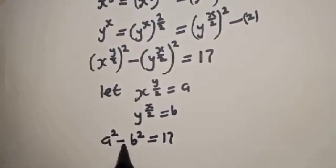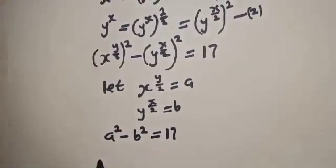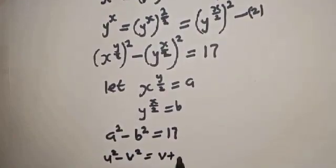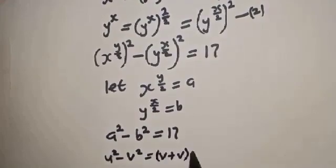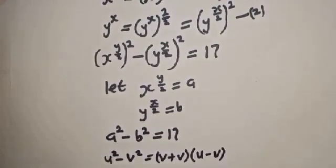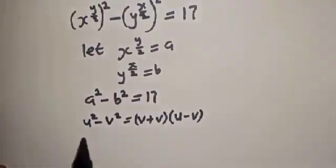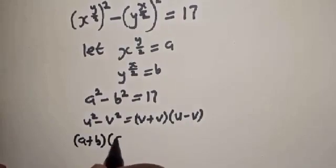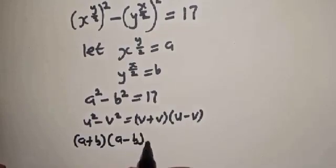This is a difference of perfect squares. Using the identity u squared minus v squared equals (u plus v)(u minus v), we get (a plus b)(a minus b) is equal to 17.